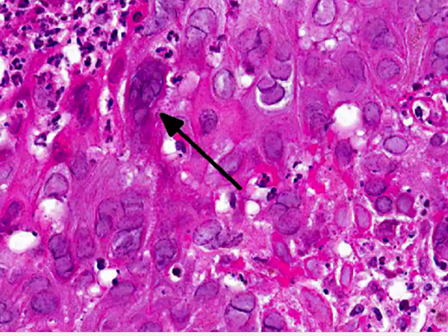Herpes B has been identified in a wide range of old-world macaques, including rhesus, cynomolgus macaques, stump tails, Japanese macaques, pigtails, bonnets, and Taiwan macaques. Although very uncommon, transmission to New World monkeys has also been seen. Transmission is horizontal between macaques, with most animals acquiring the infection by 2 to 4 years of age. While carriers of the virus generally have a low rate of shedding, it will pop up from time to time, with stress factors associated with transportation, changes in social groupings, and various forms of immunosuppression.